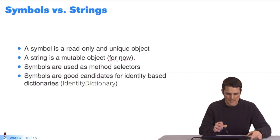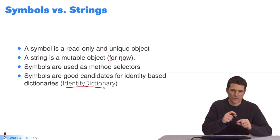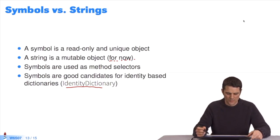Symbols are often used as method selectors. And symbols are good candidates for keys in dictionaries. Namely, identity dictionary. You remember this? We compare elements and we are easily able to calculate hashes starting with a symbol in order to generate it in a dictionary.